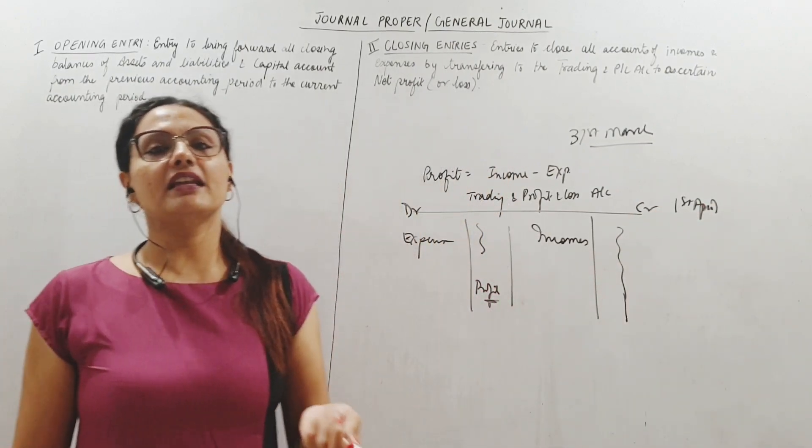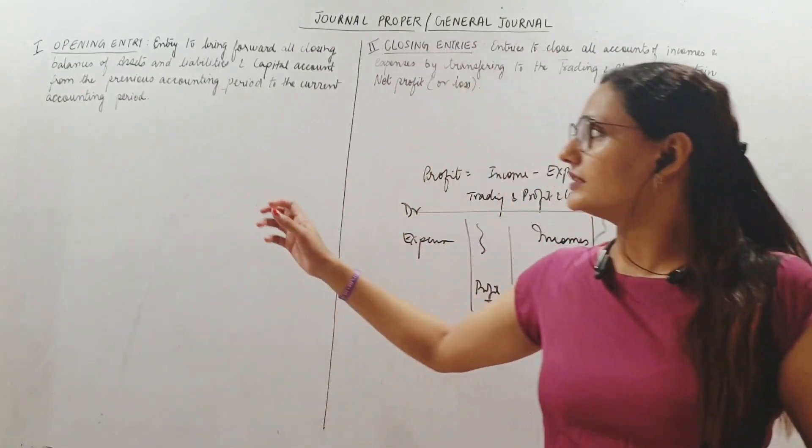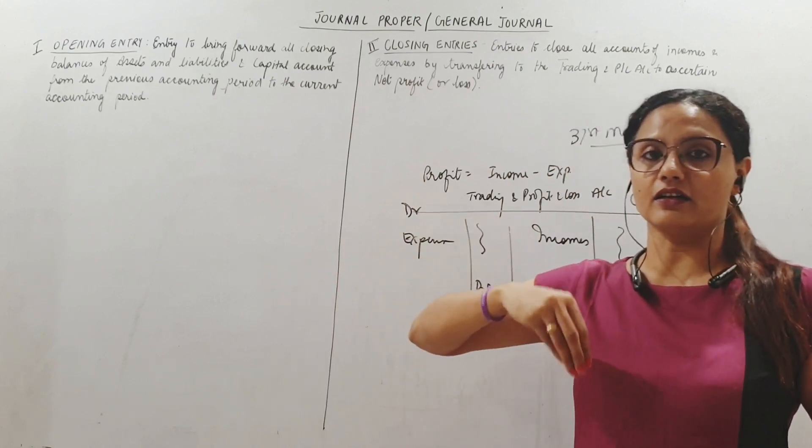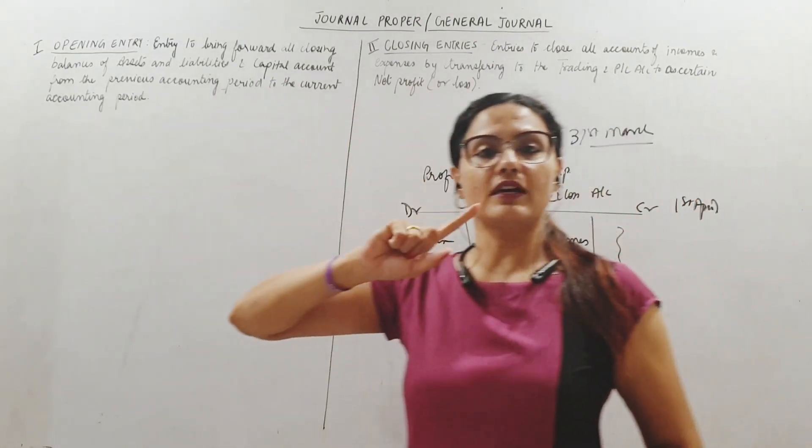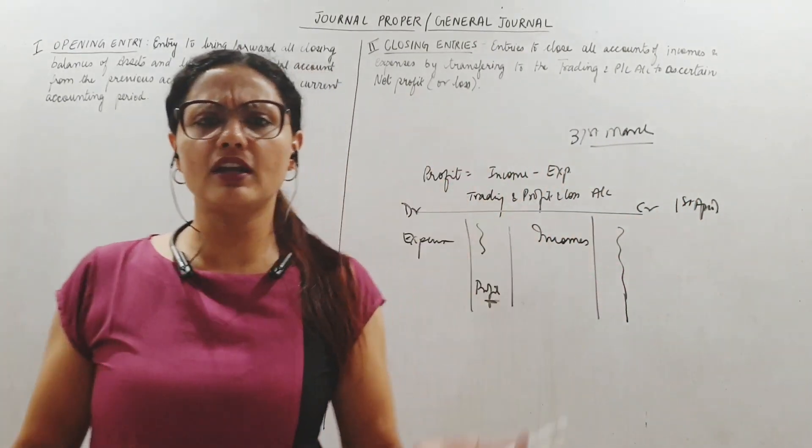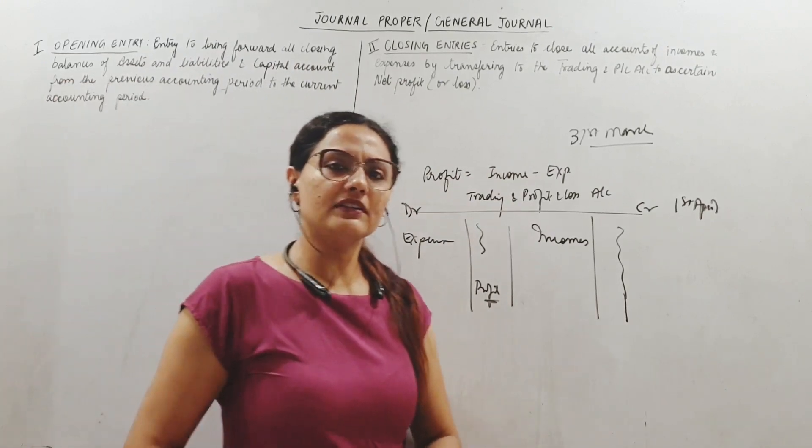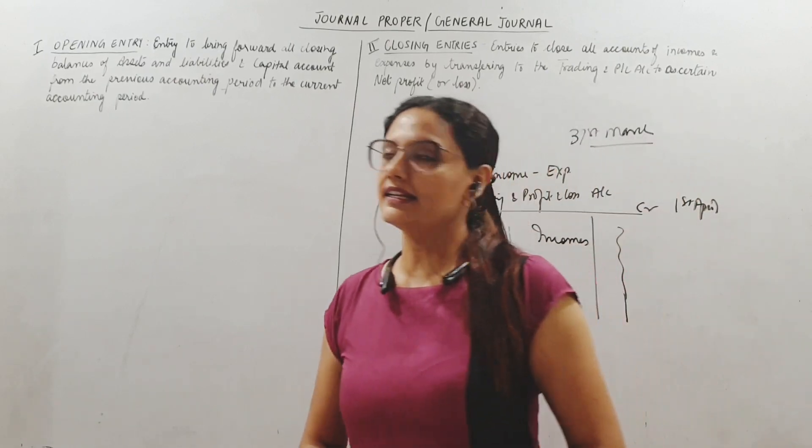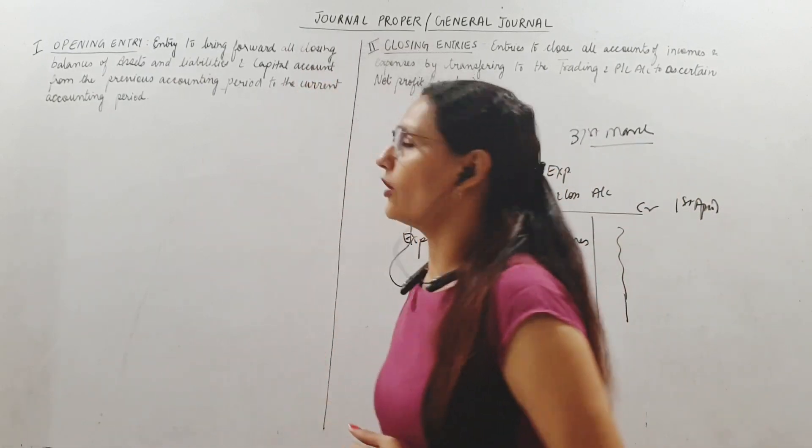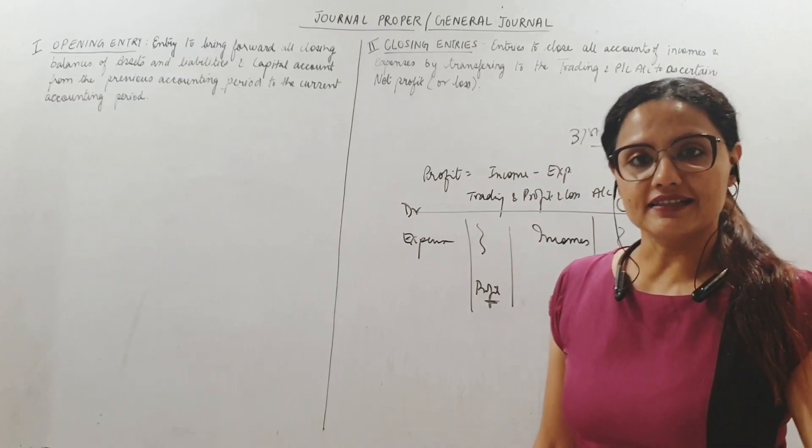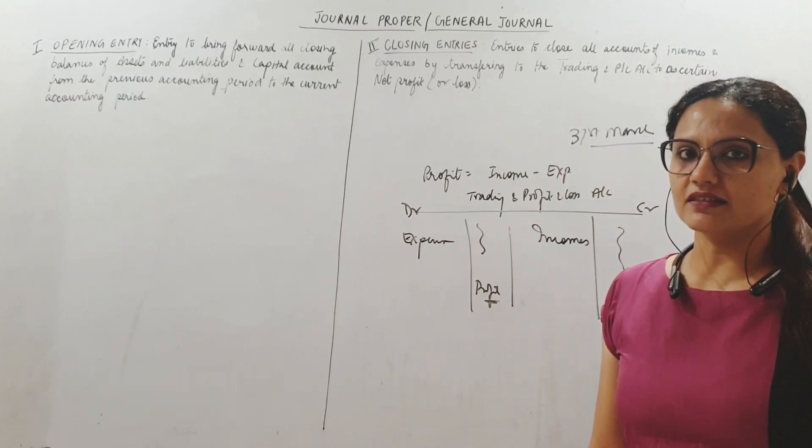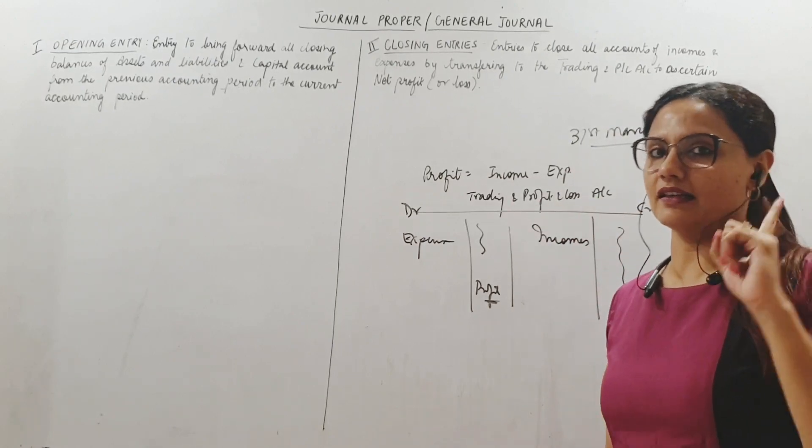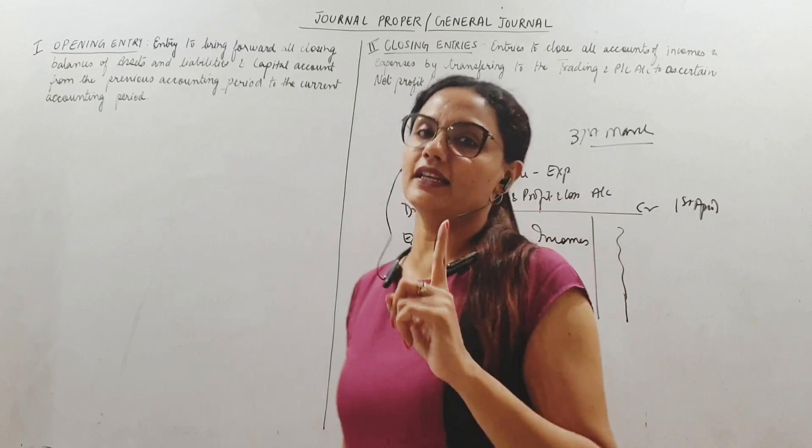At the end, 31st March, I have closed all my income and expenditures, and what remains we need to carry forward to the next year on 1st April - assets, liabilities, and capital. To bring them down from the previous year to this current accounting year, we need to pass one opening entry where we will debit all assets, credit all liabilities and capital. That's my opening entry. Opening entry is an entry to bring forward all closing balances of assets, liabilities, and capital of last year to the current accounting period.